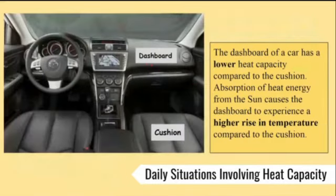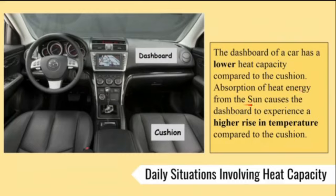This is another example of daily situations involving heat capacity. The dashboard of a car has a lower heat capacity compared to the cushion. The absorption of heat energy from the sun causes the dashboard to experience a higher rise in temperature compared to the cushion.